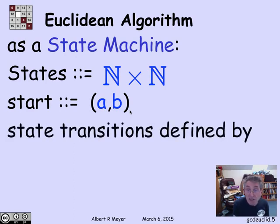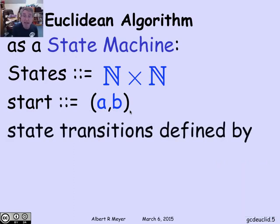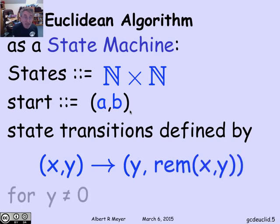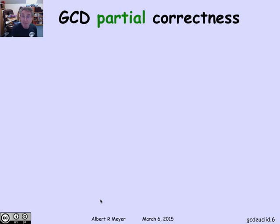The transitions are simply repeatedly applying the remainder lemma. If I have a state xy, where you think of x and y as the GCD that I'm trying to compute, I simply convert x and y to y and the remainder of x divided by y. I keep doing that as long as y is not 0. Very simple state machine, really just one transition rule.